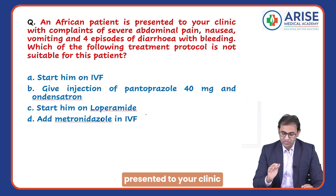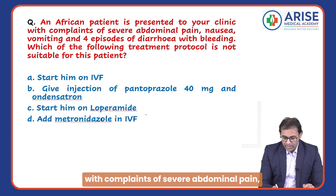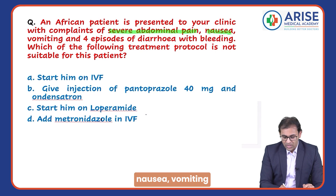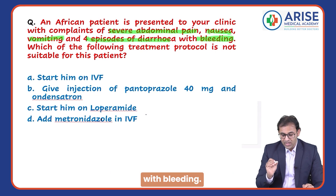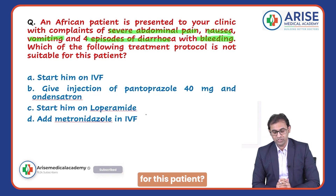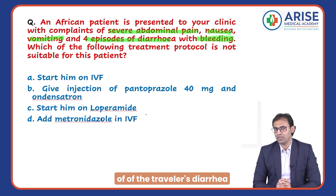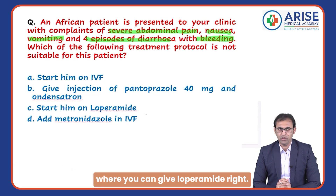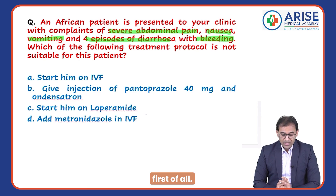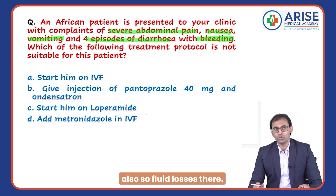An African patient is presented to your clinic with complaints of severe abdominal pain, nausea, vomiting, and four episodes of diarrhea with bleeding. Which of the following treatment protocols is not suitable for this patient? Since this is an African patient, don't think of it as a case of traveler's diarrhea where you can give loperamide. Remember, four episodes of diarrhea with bleeding, nausea, and vomiting.